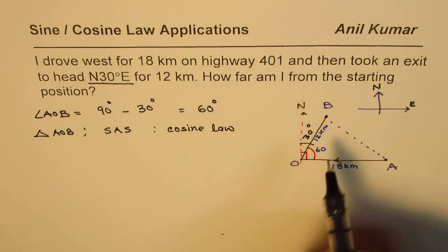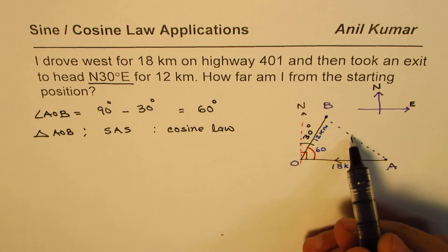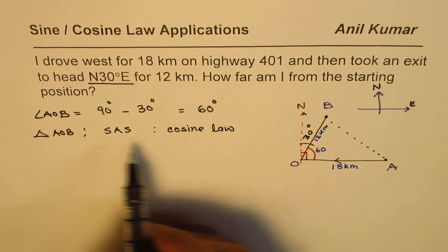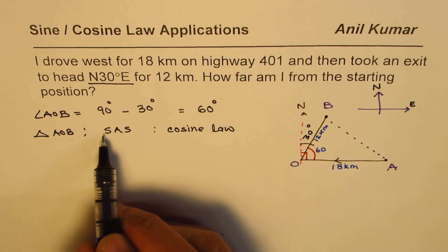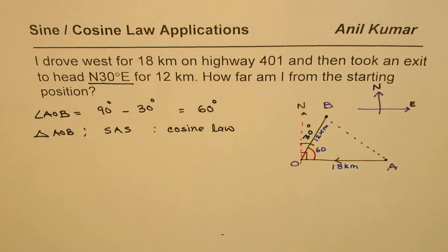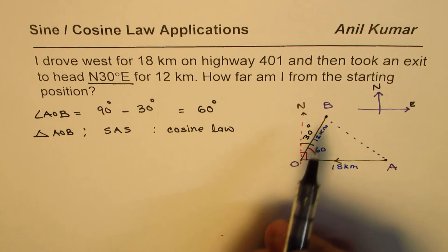For sine law we should have one combination at least of opposite side and an angle. Cosine laws are used for sides with included angle or all three sides.